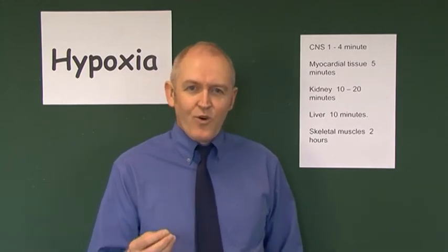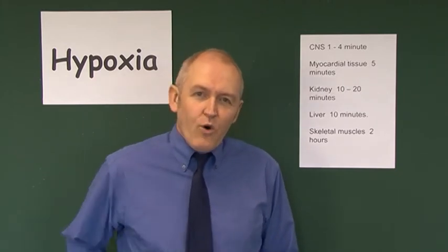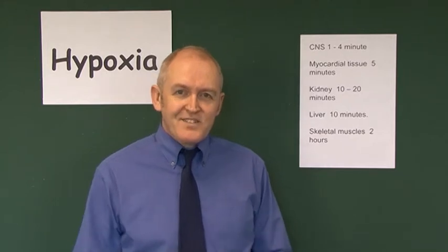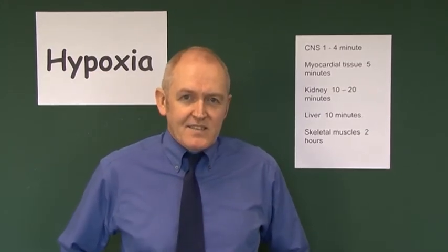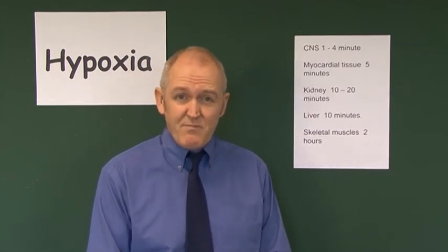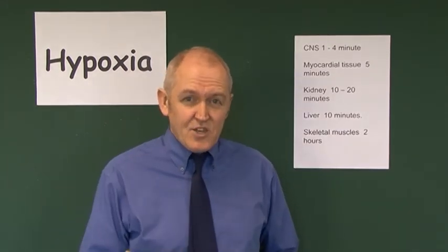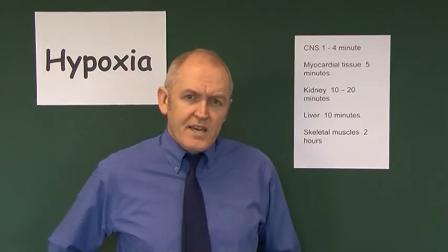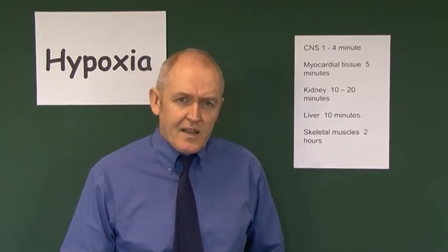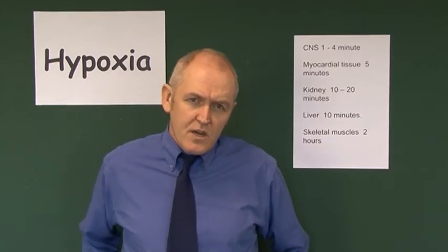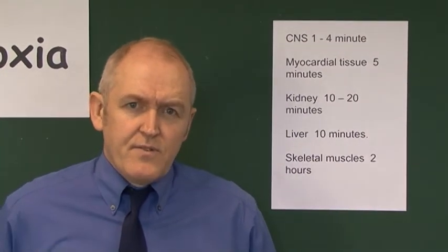Let's think about how long it takes for oxygen lack to damage different tissues of the body. The brain is the most sensitive organ to hypoxia. If the brain is deprived of its blood supply, it will stop working and the patient will become unconscious within 10 to 20 seconds — I've seen this in cardiac arrest situations with ventricular fibrillation on the monitor. Within one to four minutes, brain damage will start to occur. We normally say that if a cardiac arrest goes on for three minutes, there is a risk of brain damage.